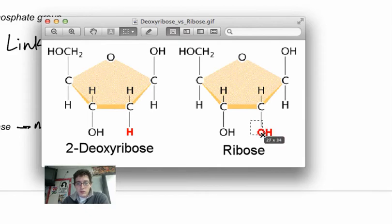This OH group right here is the one we're comparing to. Notice on the deoxyribose that the OH is missing right here. That is the deoxy. We've lost an oxygen. We've taken an oxygen away from this ribose, and it has to do with how these link up to one another.